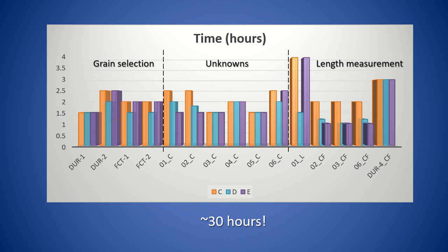The three students who have completed all components of this module reported the time taken to complete data acquisition per sample. For section 1, grain selection, and section 2, challenge unknowns, time spent ranges from 1.5 to 2.5 hours,